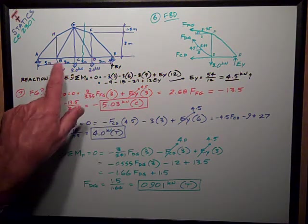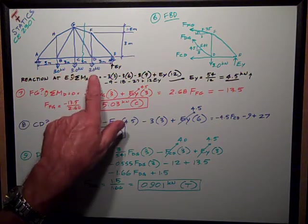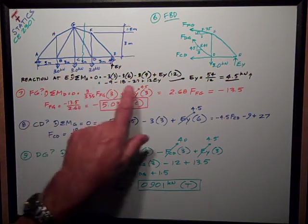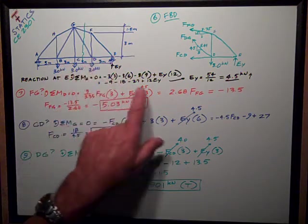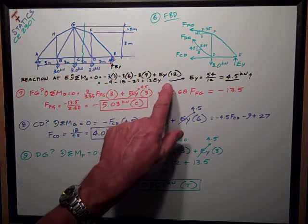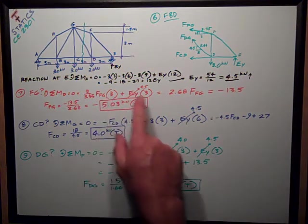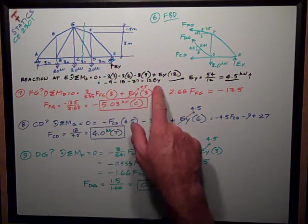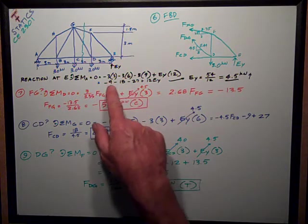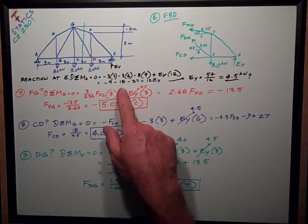All these are counterclockwise rotations about point A, all these applied forces of 3 kilonewtons. So it's negative 3 times 3, negative 3 times 6, negative 3 times 9, plus, because it's trying to rotate counterclockwise, is EY times 12 meters. Doing the math, I get this, rearranging, putting all those negatives over on the other side of the equal sign.